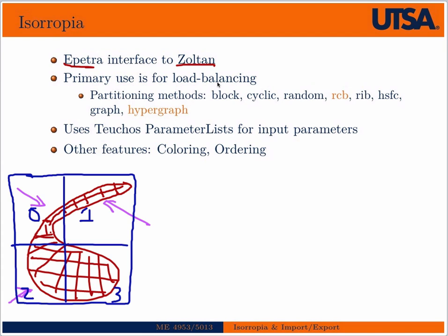A more sophisticated load balancing scheme would be to take the part in space and distribute it equally, such that maybe this piece goes to one processor, this piece to another, this piece to another, and this piece to another — where each of those has a nearly equal amount of operations to be done. This would be analogous to an RCB type load balance operation.